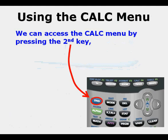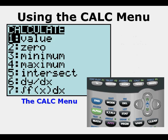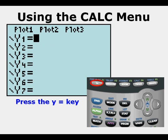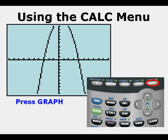We can access the calc menu by pressing the second key, then the trace key that accesses the calc function above the key. And here is the calc menu, seven options total. Access the function editor by pressing the y equals key. Now we enter the function y equals negative x squared plus x plus 12. Press graph.